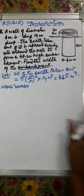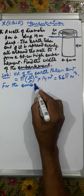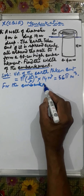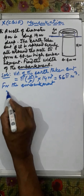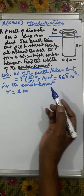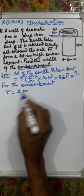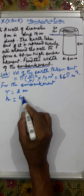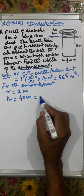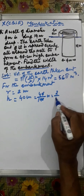For the embankment: the inner radius is equal to 2 meters, the same as the well. The outer radius is R, which we have not yet found. The height is 40 centimeters, converted into meters: 40/100 = 2/5 meter.